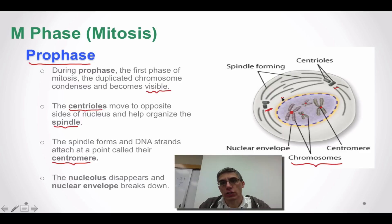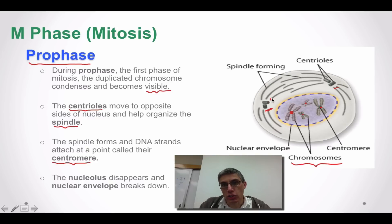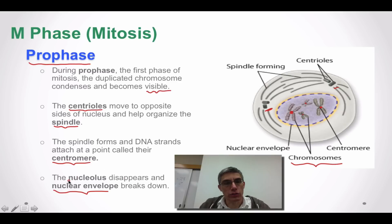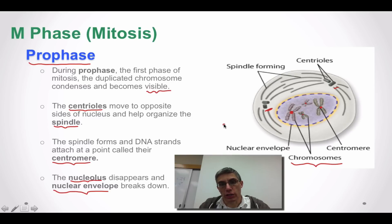The centrioles, once formed, move to opposite sides or the poles of the cell. There were actually two pairs of centrioles to begin with, and they move to the opposite poles. In addition to the nuclear envelope breaking down, the nucleolus — the site of protein synthesis in the cell — also breaks down during prophase.